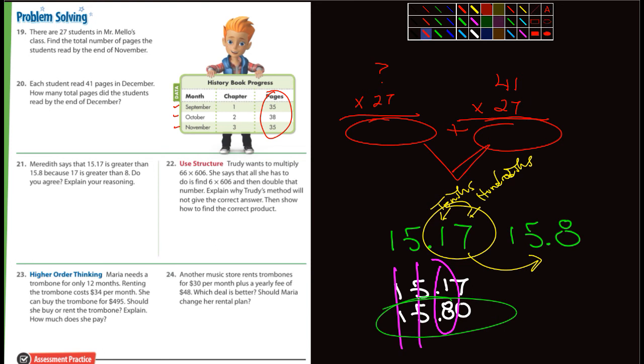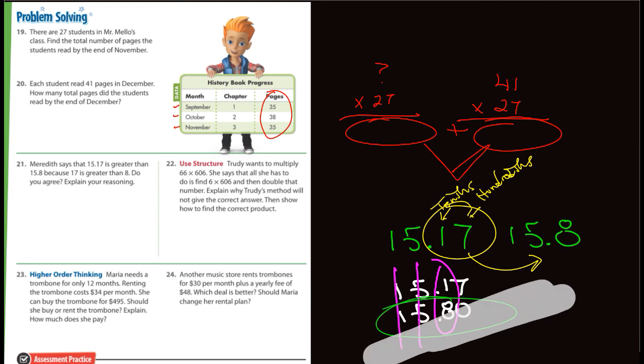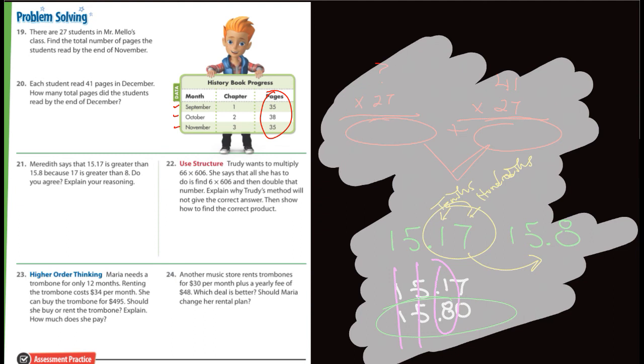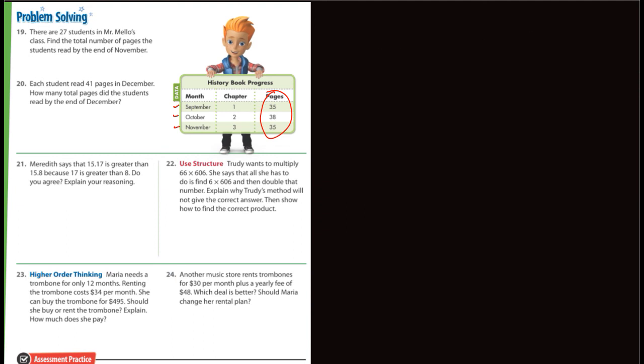22. Trudy wants to multiply 66 by 606. She says that all she has to do is find 6 times 606 and then double that number. No, that won't work. Why wouldn't that work? So you're going to have to do that problem. You'll actually do 66 times 606. So if she did do 606 times 6, let's see.